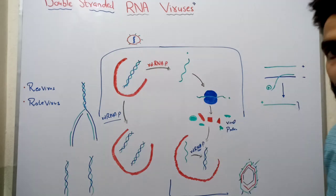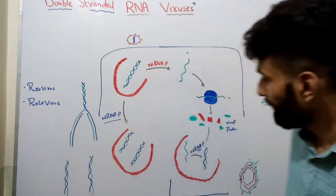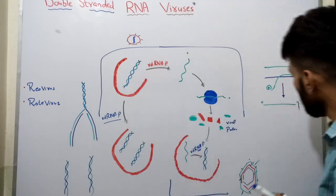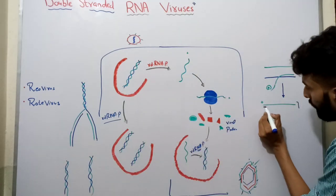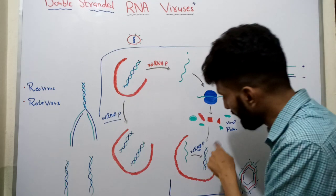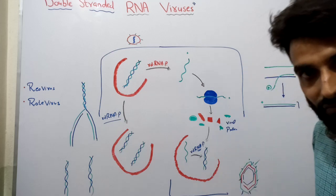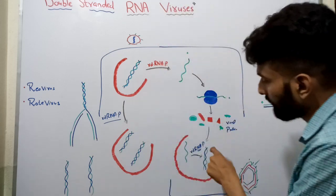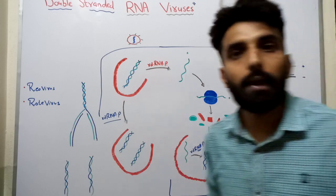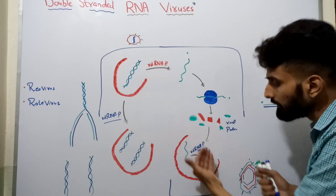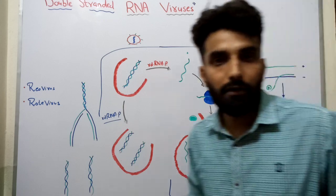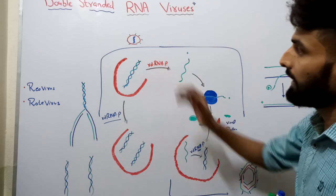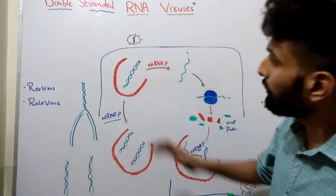These viral proteins will assemble to form a nucleocapsid, and this nucleocapsid will take in the positive RNA along with the RNA-dependent RNA polymerase. Now the polymerase performs its replicase activity, converting the positive RNA into double-stranded RNA by adding a negative strand over it. Since double-stranded RNA is easily identified by the host cell, this process must take place within the nucleocapsid so that the dsRNA remains safe from the host antiviral activity.